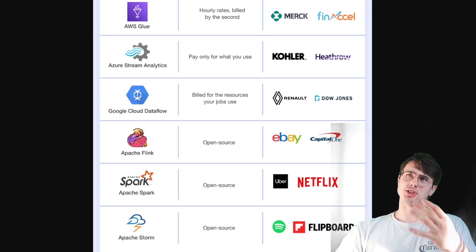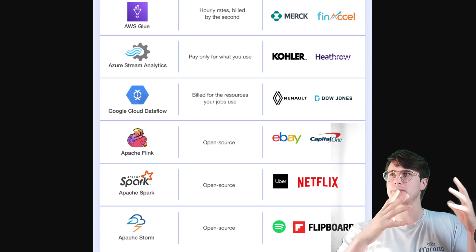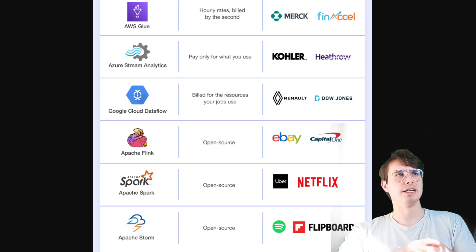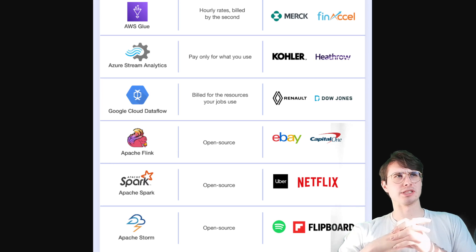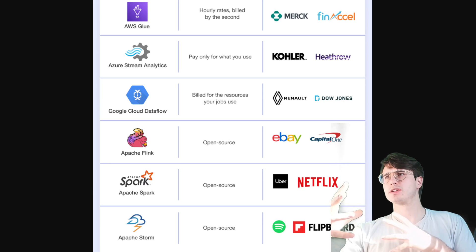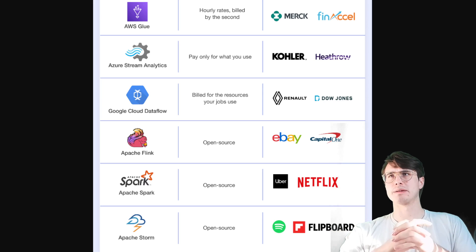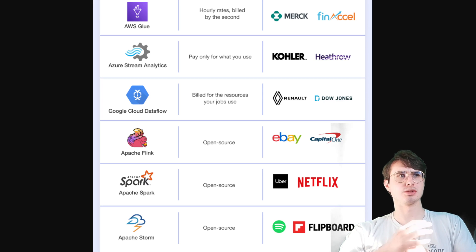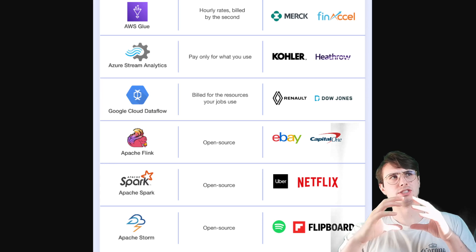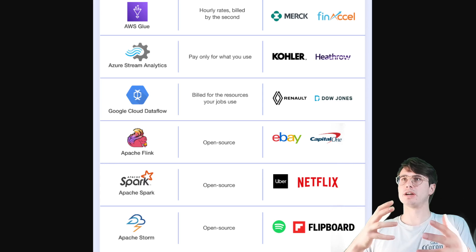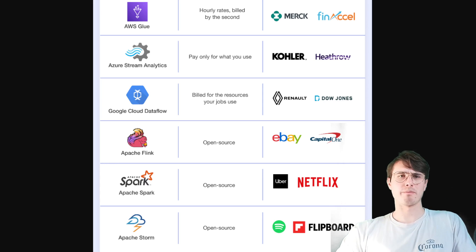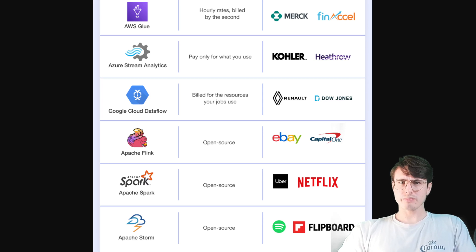You also have open-source services like Spark, Apache Flink, and Storm. Spark is probably the biggest one for big data transformation — Databricks is essentially just managed Spark. That's what companies like Netflix and Uber use. With Spark, you manage your own cluster and have a lot of configuration options to optimize your transformations, whereas the managed cloud services are less configurable but much easier to manage.